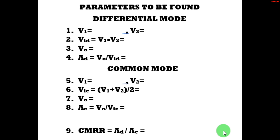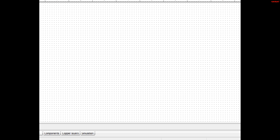The output voltage is obtained in both of the modes. In Differential Mode, the voltage gain is known as AD, whereas in Common Mode, it is known as AC. The ratio of AD to AC is known as CMRR, which is to be found last.